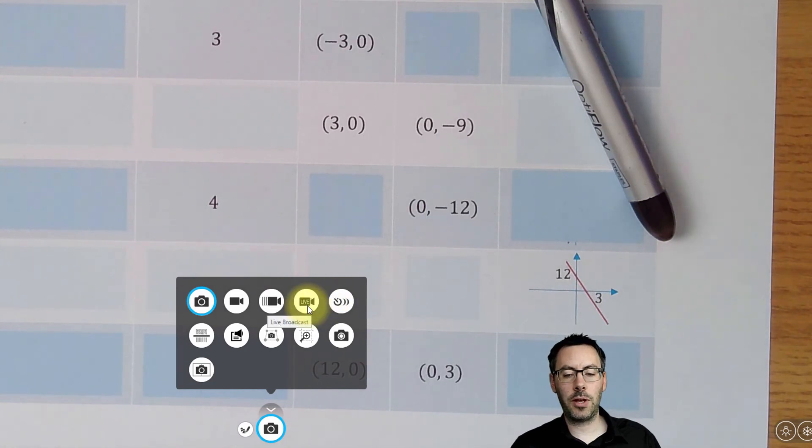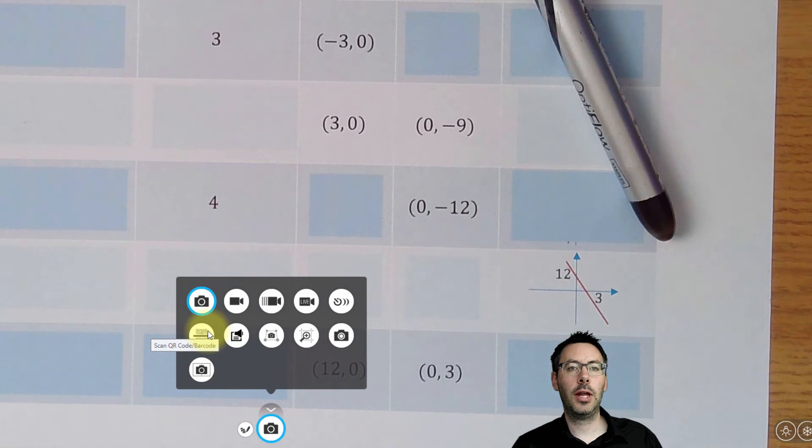You've got a live stream button which allows you to broadcast straight to YouTube from within the software. You've got a scan QR or barcode option. If you've got a textbook with QR codes that takes you to a web-based resource, you can scan those there and take you straight to it.